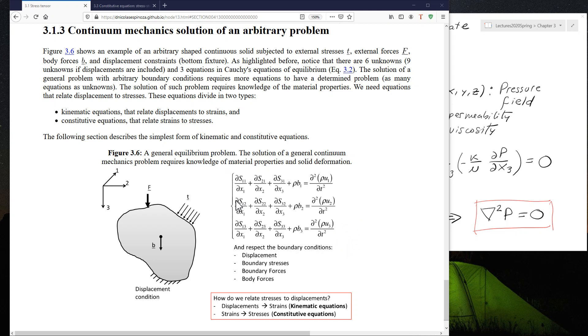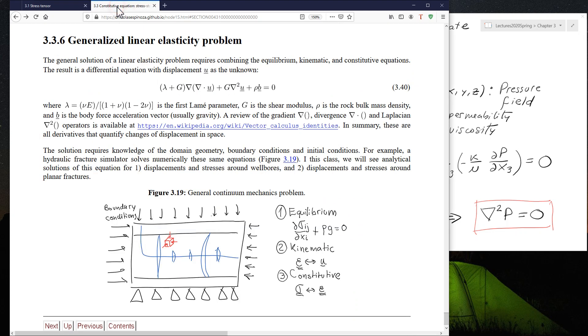So what we're going to do is, we're going to use the theory of small strains for the kinematic equations, and the theory of linear isotropic elasticity, and we're going to combine that with the equilibrium equations, and what you're going to find out is an equation like the one you see here, 3.40.